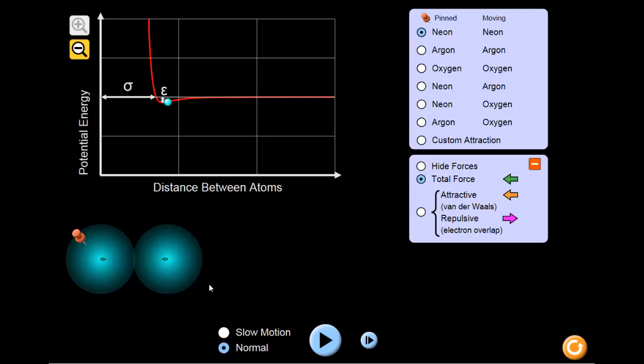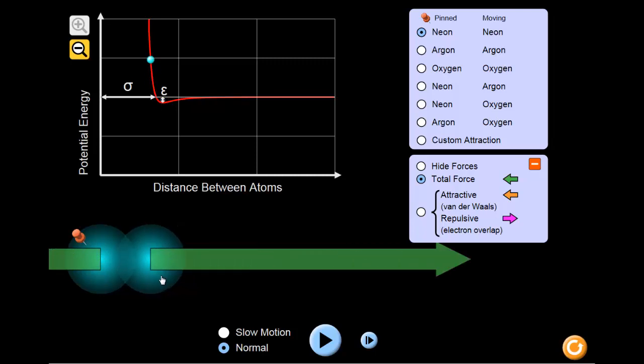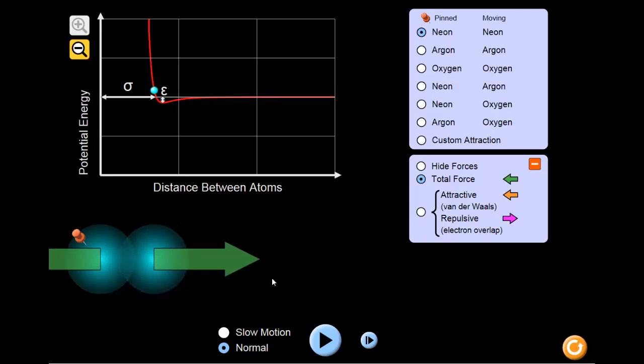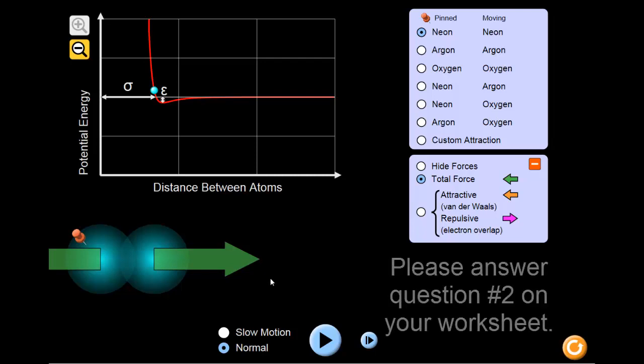Now we'll take a look at what happens when the two atoms are very close to each other and are overlapping. Looking at the green arrows, is there now an attractive or repulsive force? Take a second to answer the question on your worksheet.